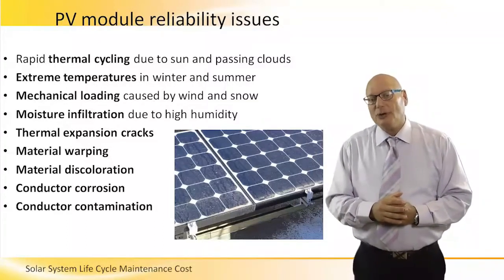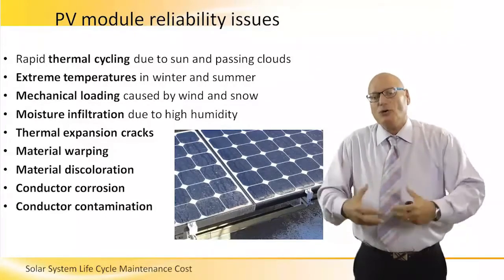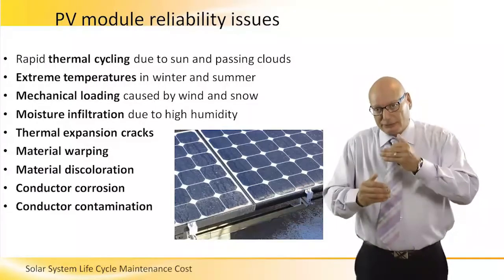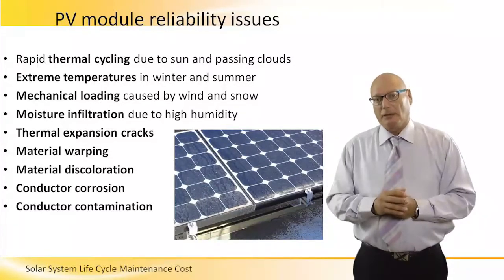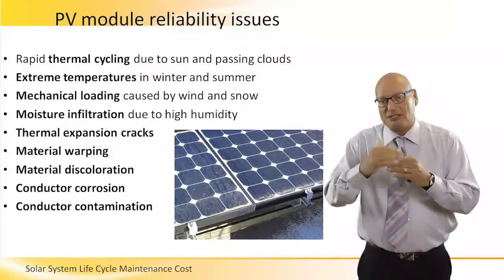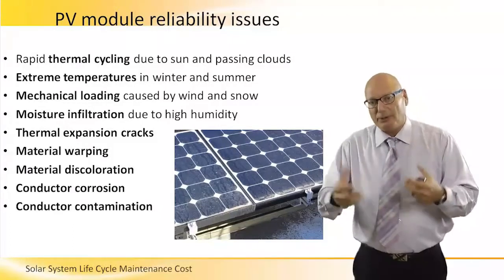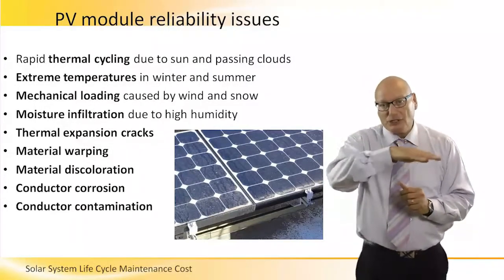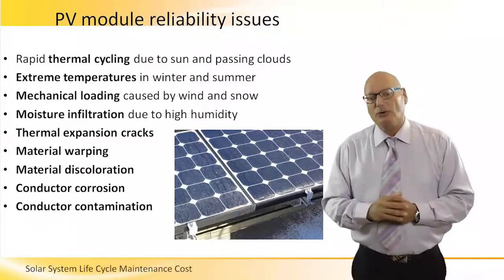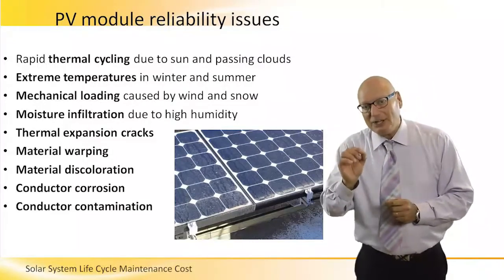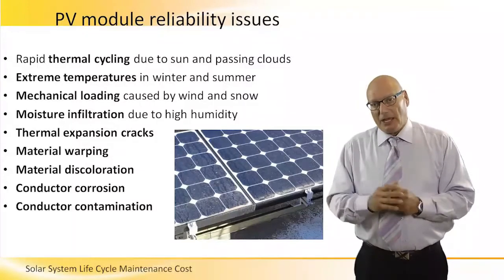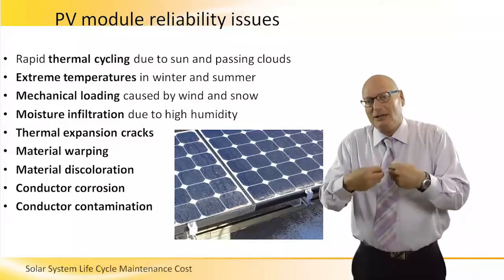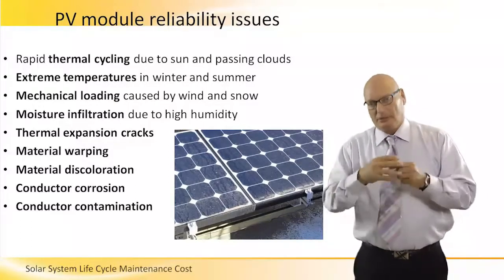We also have expansion cracks because of thermal effects. Not only does the silicon itself deteriorate and reduce its efficiency in transforming photons into electricity, but because of the thermal coefficients of the materials — the chemical materials, the metal, and the glass of the panel — there will be cracks, material warping, material that changes its flatness, and material discoloration. Especially the white areas around the cells, and the cells themselves instead of being dark blue over time change color, meaning their chemical molecular content has changed. That is a reliability issue.